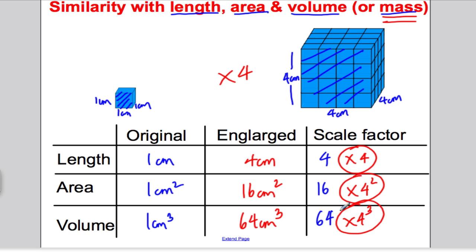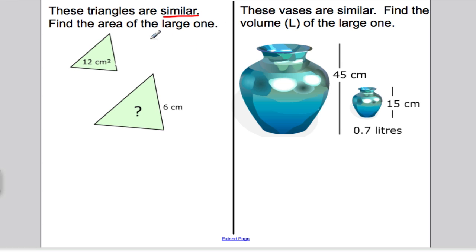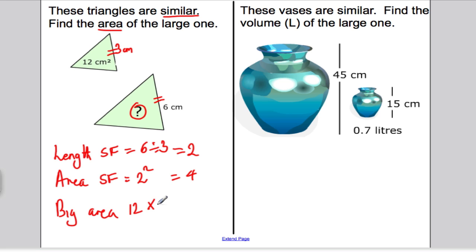Let's do a question, and then we'll finish there and move on to exam questions in another video. Here, it tells you these two triangles are similar. It asks you to find the area of the larger one. We're missing a fact here - this length here should be 3 centimetres. What's the length scale factor? The first thing you do is work out the length scale factor. It's simply 6 divided by 3, which is 2. If you know the length scale factor is 2, the area scale factor is 2 squared, which is 4. Then the big area is 12 multiplied by 4, which is 48 centimetres squared.